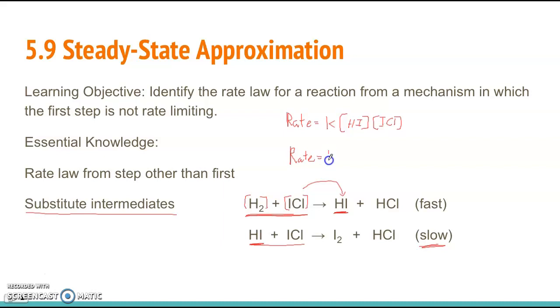You keep that part the same. When we substitute out HI for these two, now we end up having two ICLs. So now ICL is going to be to the second order, and you still have, or you now have H2 to the first order. So we have to substitute out intermediates in this situation.